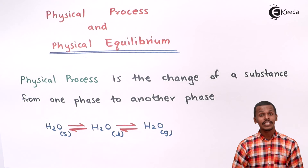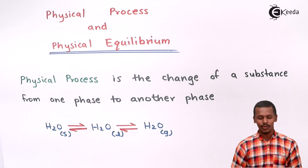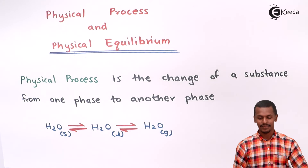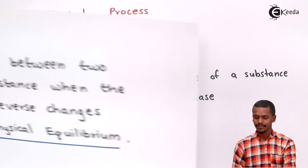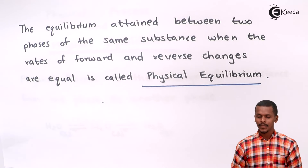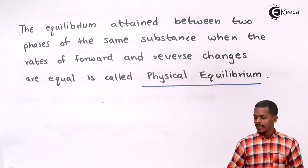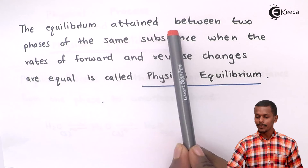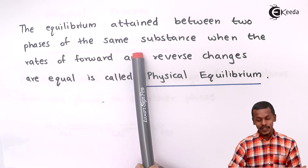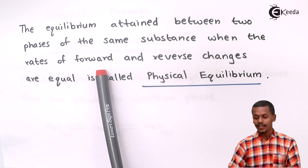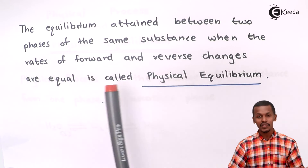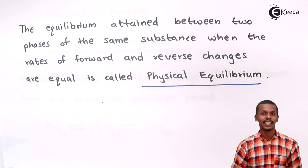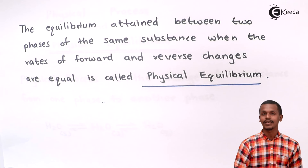Now that we have covered the physical process, let us understand what is actually physical equilibrium. The equilibrium attained between the two phases of the same substance, when the rate of forward and the reverse changes are equal, is called physical equilibrium.